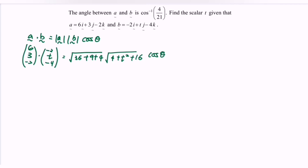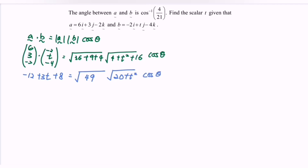Computing the left-hand side, we get −12 + 3t + 8 equals √49 times √(20 + t²) times cos θ. This simplifies to 3t − 4 equals 7 times √(20 + t²) times cos θ.